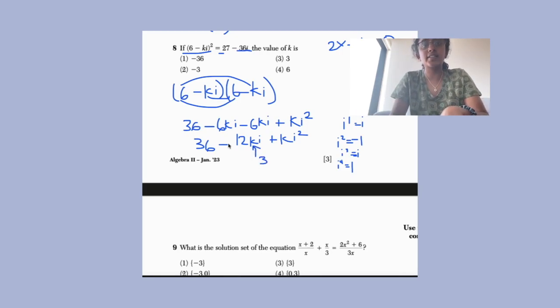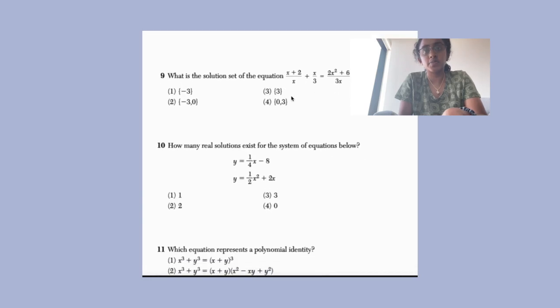Okay, so if we want this thing here to be -36i, I would assume that k would have to be 3, because -12 times 3 is -36. And then this, and then if i² is -1, this would be, we know that this would be k²i². So then this, so then this would be 9 minus 9. So 36 minus 9 is 27. And then 12 times 3 is -36. So the value of k would just be 3. What is the solution set of the equation?